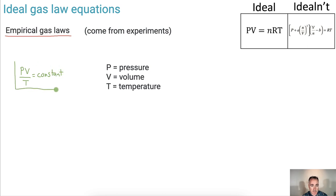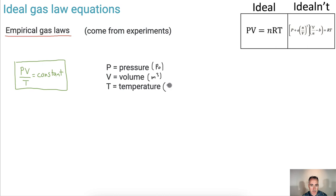We're going to have this on our data booklet as well. Let's remind ourselves: P is pressure, which is in pascals; V is volume, which is in meters cubed; and we have temperature, which should be in Kelvin.